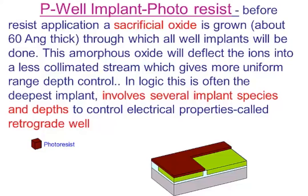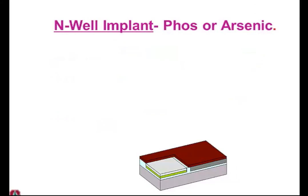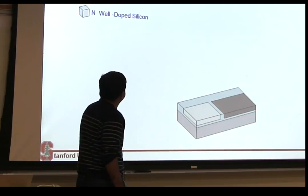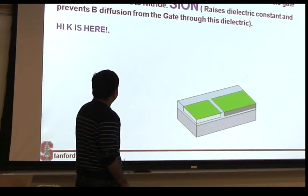And then you do this for your P-well. Then you do the reverse mask, and you cover your P-well, and you expose your N-well. And if it's N-well, you implant with phosphorus or arsenic. And then you anneal them together, so they are activated, and you have your P-well and your N-well region defined.